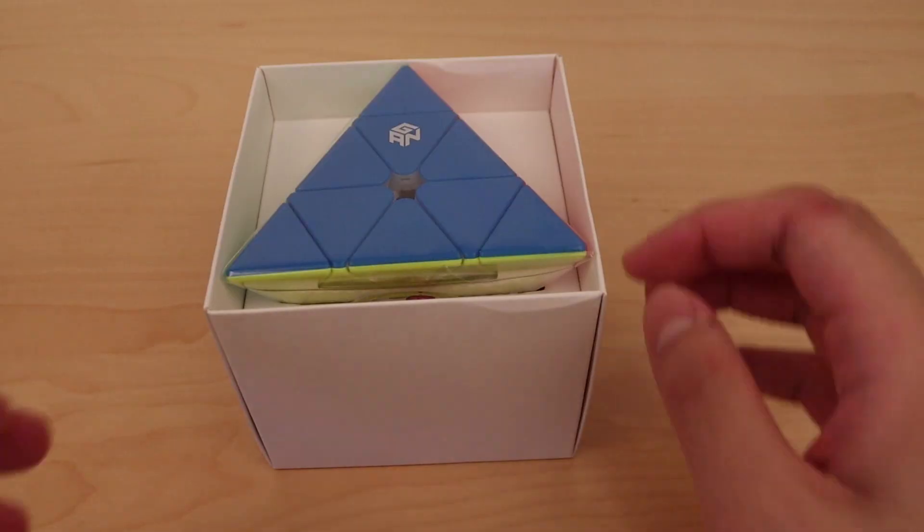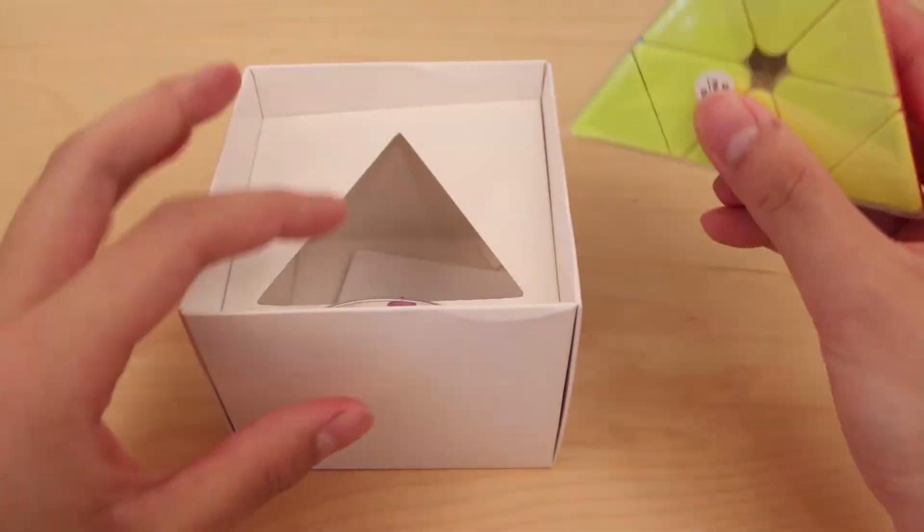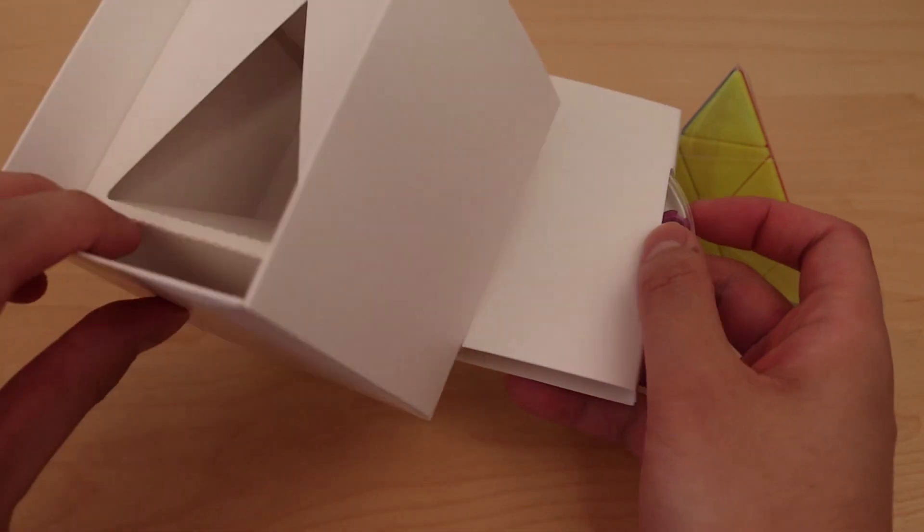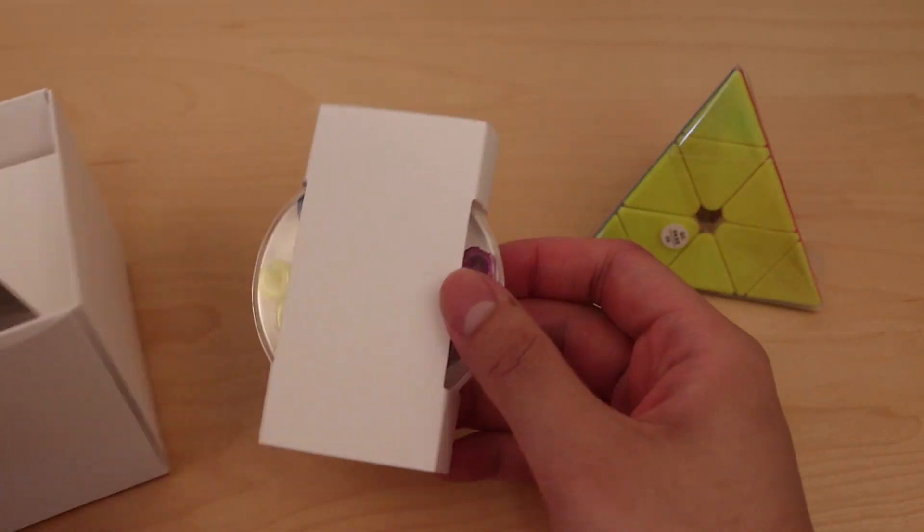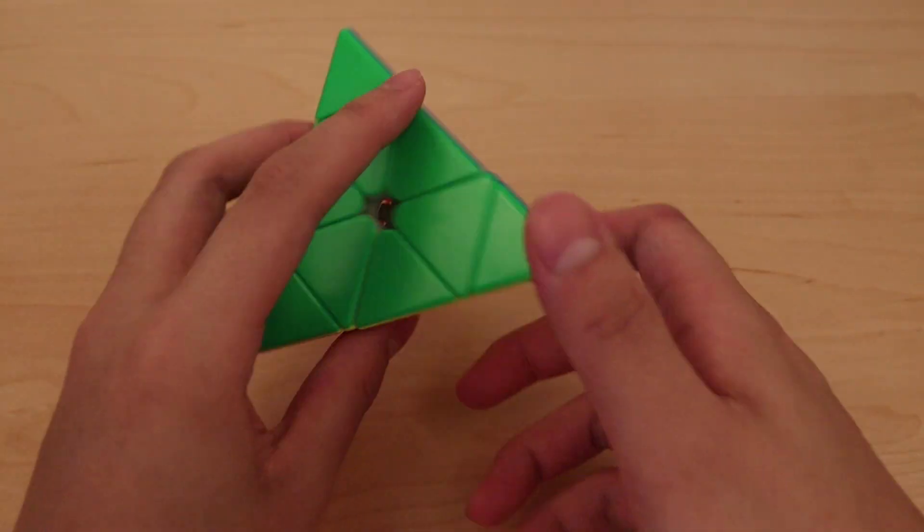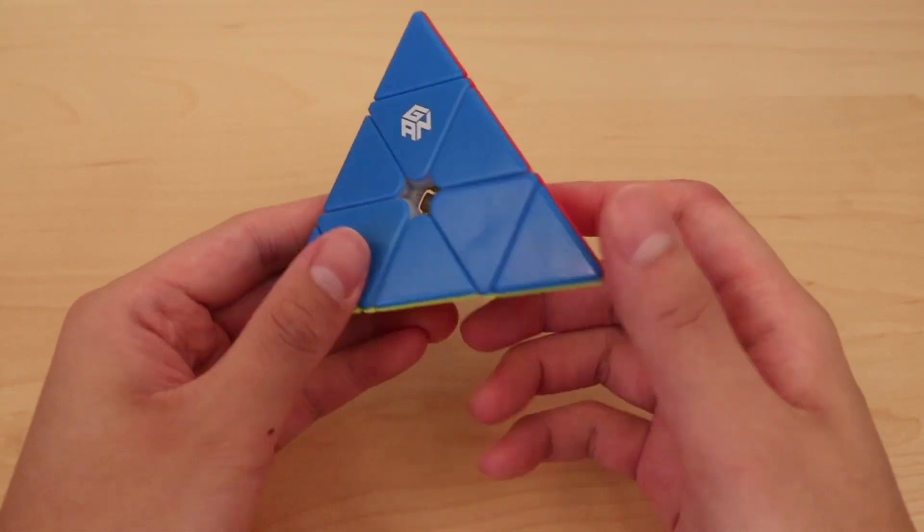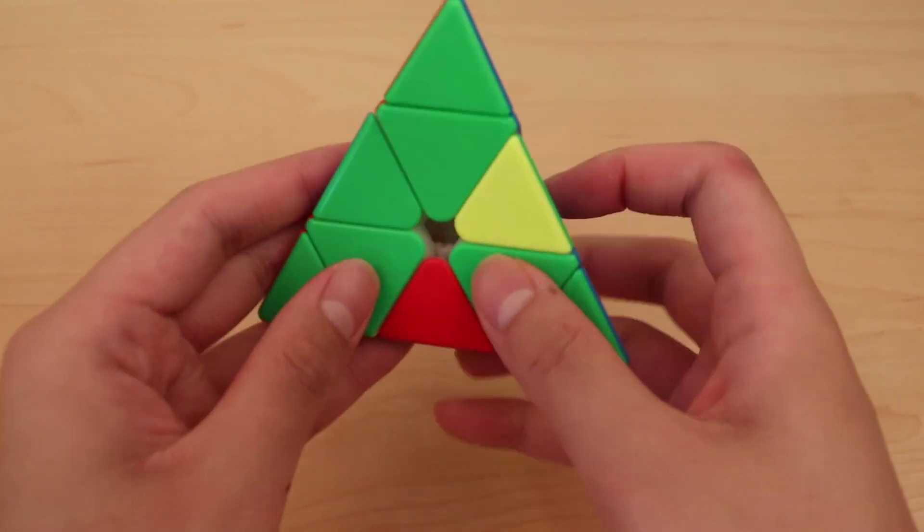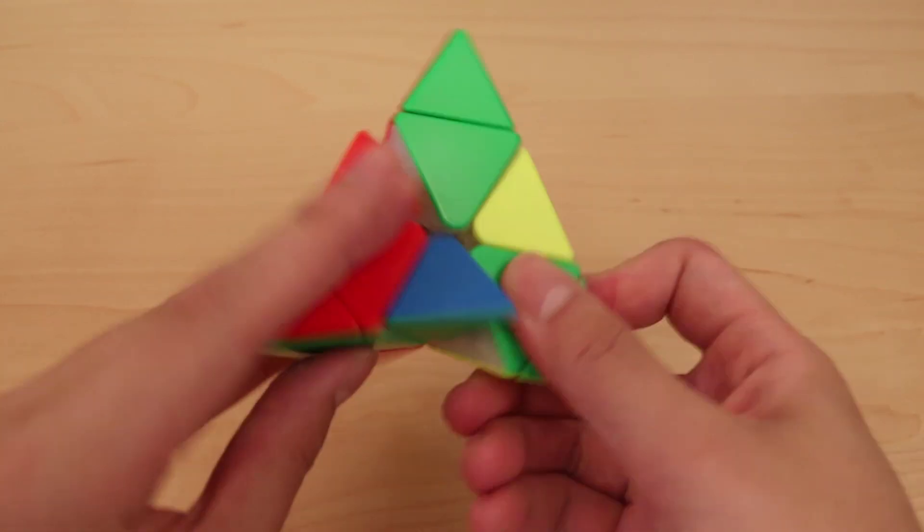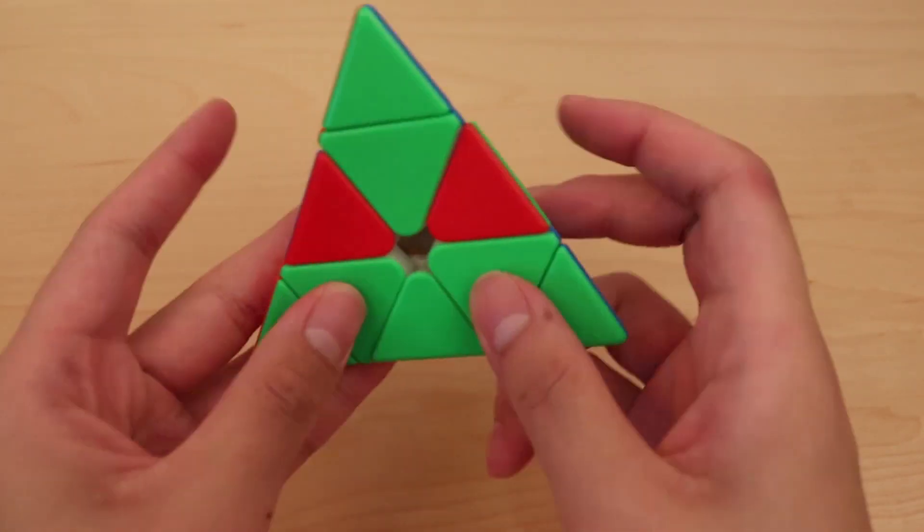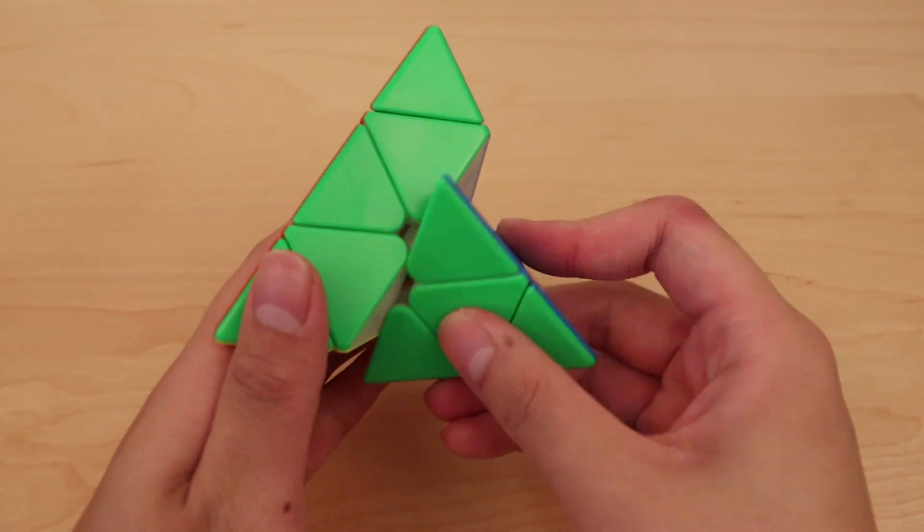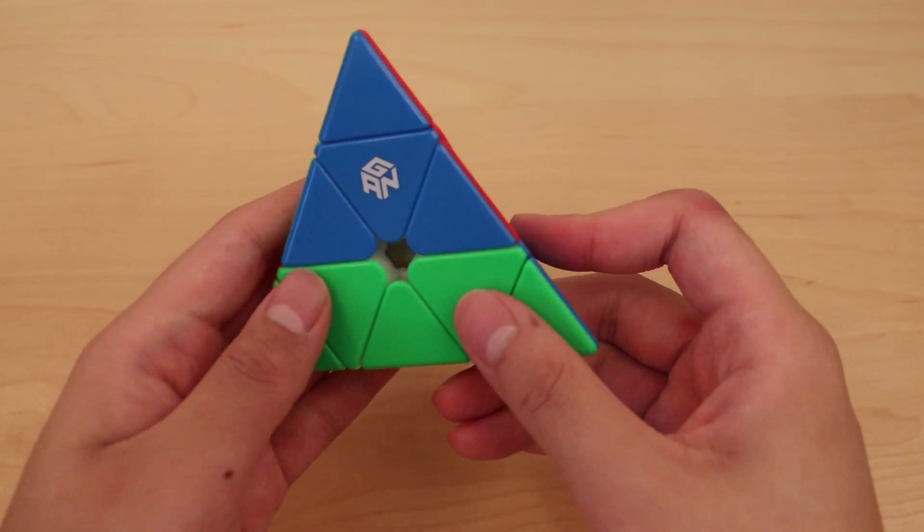Alright on to the final puzzle which is going to be the GAN Pyraminx M Enhanced. Compared to the standard version this is quite expensive. So I guess we'll see if the extra price is worth it. And we have some accessories here. GS nuts and I think that's it. I heard a lot of Pyraminx solvers switch to this as their main. Well first of all it's very nice. It's very quiet. Yeah I can hear that. Wow. Very very quiet. A bit of locking issues here but. Holy crap.